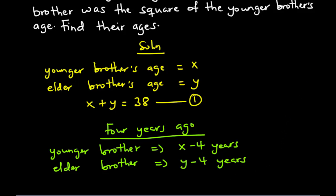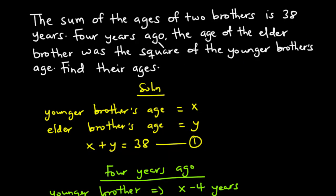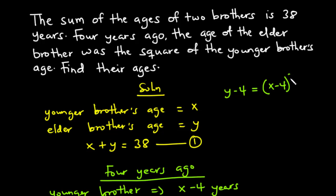Going back to the question: four years ago the age of the elder brother was the square of the younger brother's age. This means y minus four, which is the elder brother's age four years ago, equals the square of x minus four. This gives us our second equation, equation two.